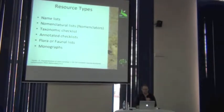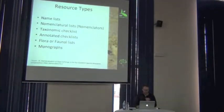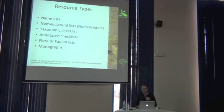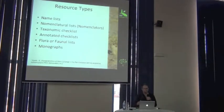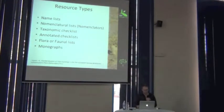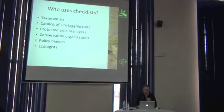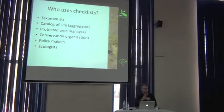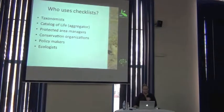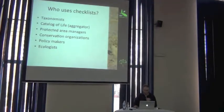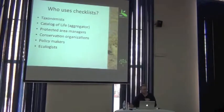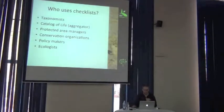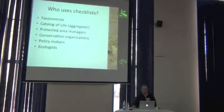There's actually a whole bunch of different checklist types. I'm not going to go into each of them in detail, but if you're interested, just check the next slide. Who uses checklists, and why would you want to publish them? Taxonomists use them. Catalogue of Life uses them — they aggregate checklists from different sources to build the tree of life. Protected area managers need to know what species exist inside a protected area. Conservation organizations, ecologists — this is also valuable information.